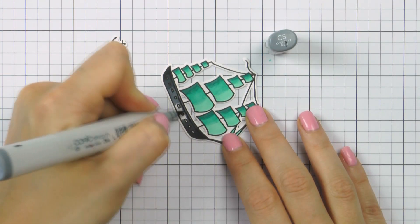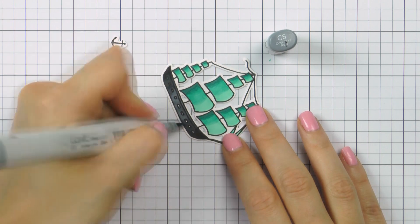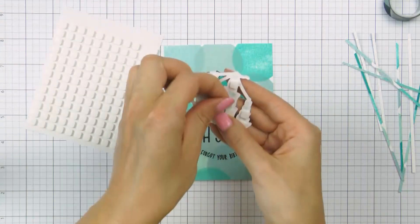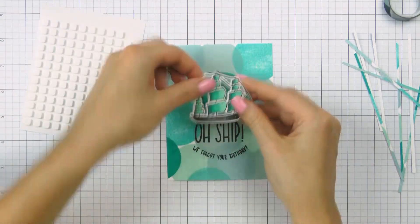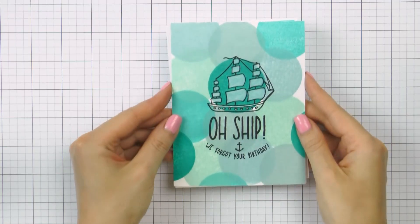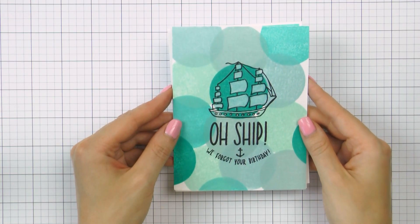I used C9, C7 and C5 colors. Using foam adhesive I adhered the ship and the anchor onto my last project. So here are the three completed variations of one card.